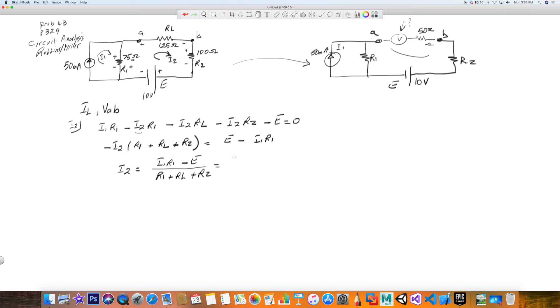Can we put some values in here? Yes, we could do I1, which is 50 milliamps, so 50 times 10 to the minus third times R1, which is 75, minus E, which is your 10 volts, everything divided by 75 plus 125 plus 100.